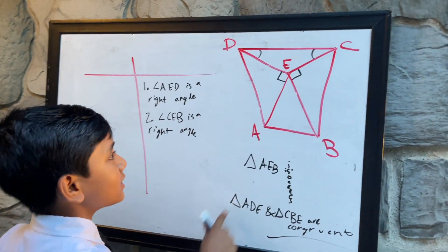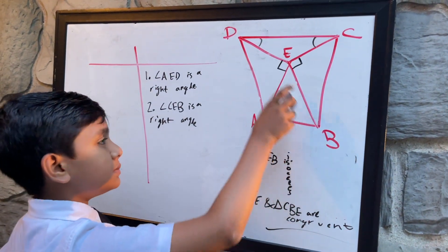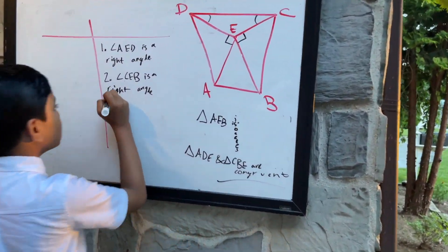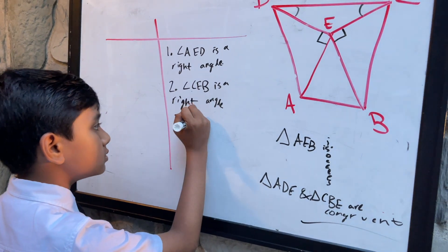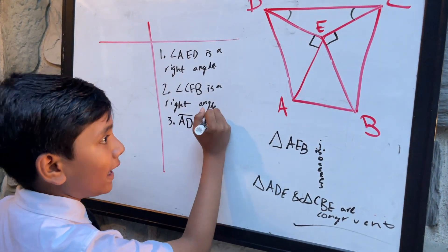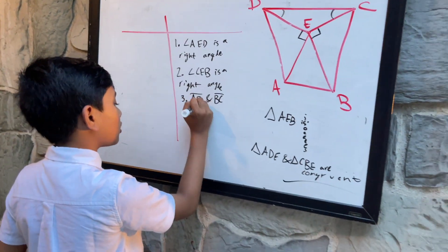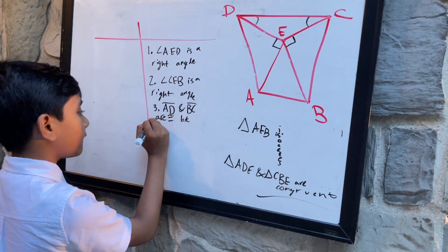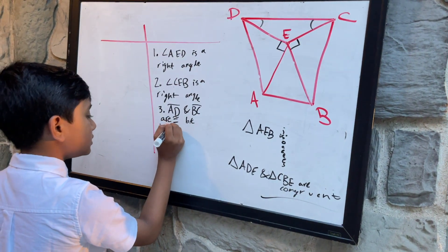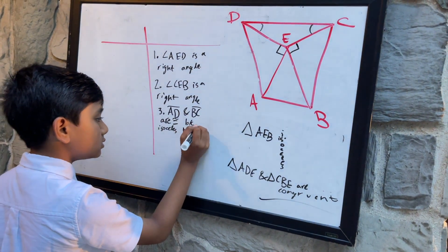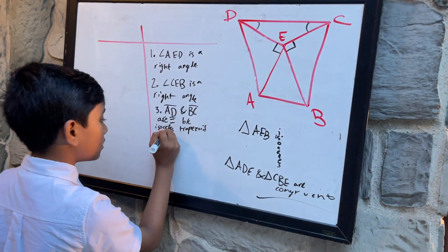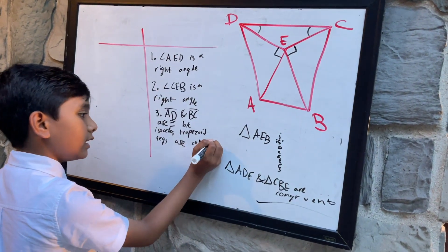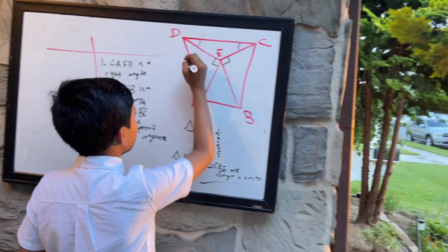That means these legs must be equivalent because it's an isosceles trapezoid. So AD and BC are congruent because isosceles trapezoid legs are congruent. Now we have this additional piece of information.